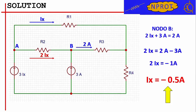The result is an equation of the currents for node B, given by the expression 2 times Ix plus 3 amperes equals 2 amperes. We reformulate this expression in order to obtain the value of Ix. For this purpose, we bring the term 3 amperes to the right. Thus, we obtain that 2 times Ix is now equal to 2 amperes minus 3 amperes which is equal to minus 1 ampere.